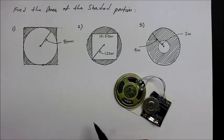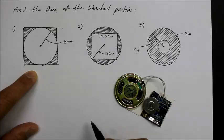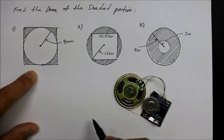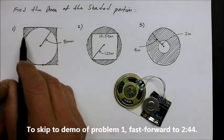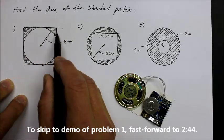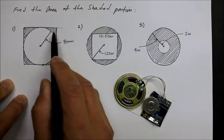This instructional video is about finding the shaded region of a given polygon. We've talked about the area of a circle, the circumference of a circle, and how to solve for the radius. Here we have a square with a circle inside, and we want to know what is the area of the shaded region.